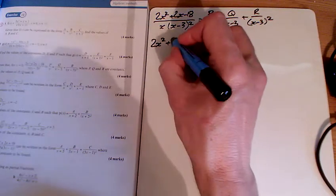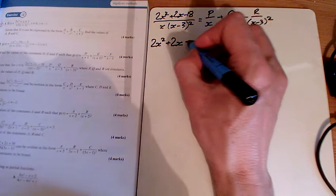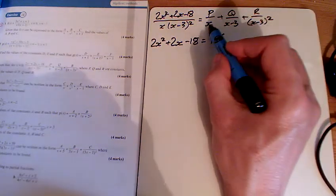Nothing really different in question 3. We've got 2x squared plus 2x minus 18 equals p times by, how do I get from here to here?